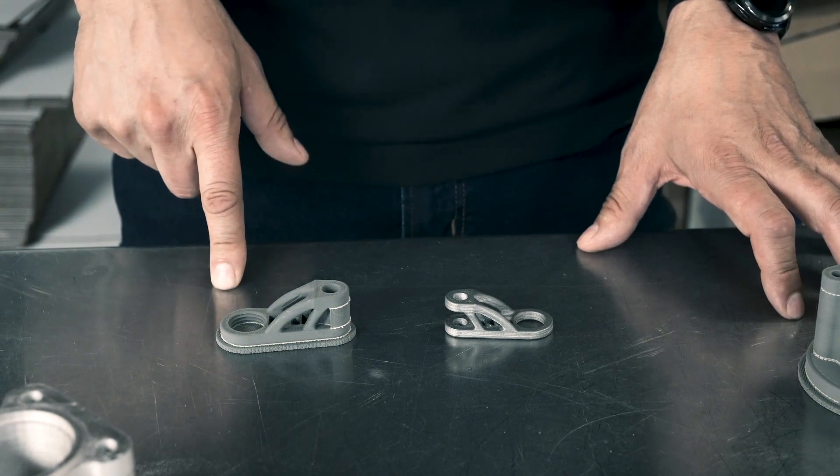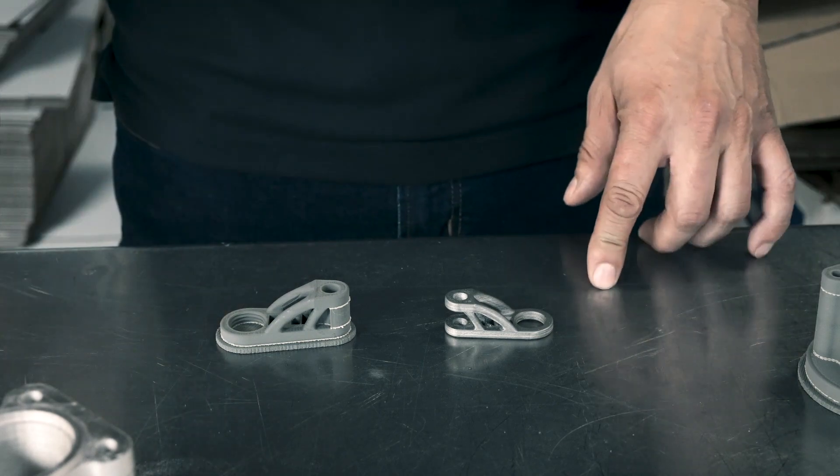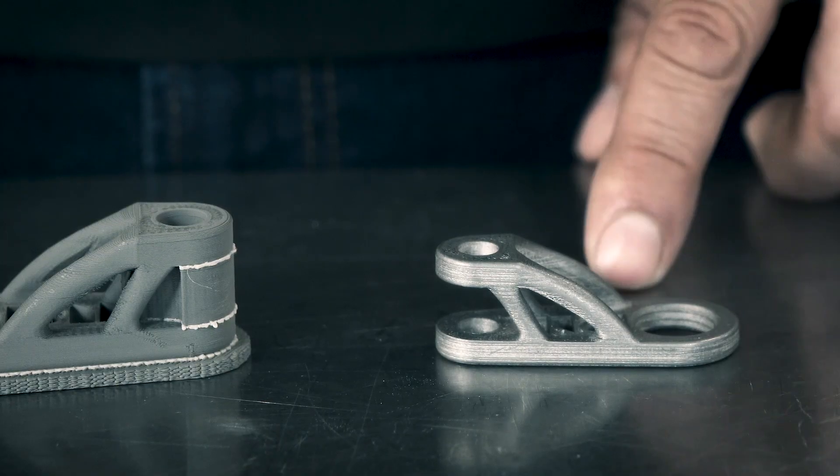We have the green part fresh off the printer and then we have the finished part that's been debound and sintered. Let's take a look at the finished part.